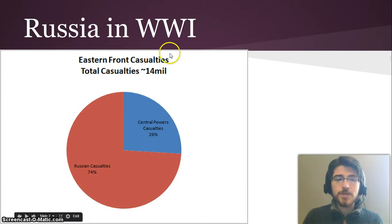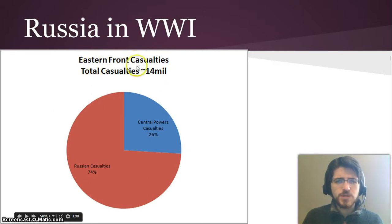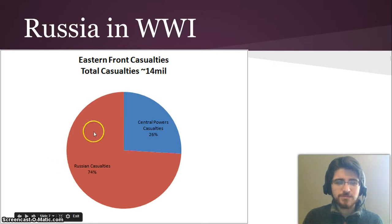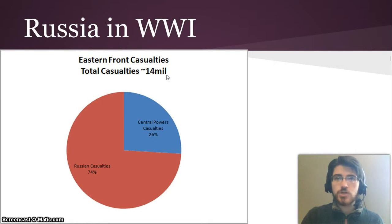In World War I, let's look at the casualties on the Eastern Front, where Russia was fighting Austria-Hungary and Germany. The casualties amounted to about 14 million, which is a lot. Russian casualties made up 74% of that, compared to only 26% for the Central Powers. So Russia had millions and millions of people dying, getting injured, and getting captured, which was very upsetting to all of the people in Russia whose family members were involved.